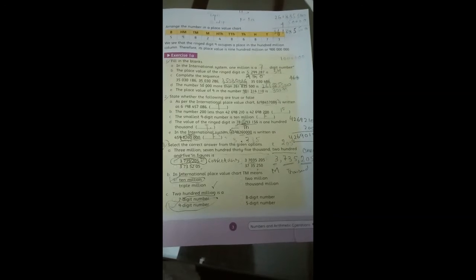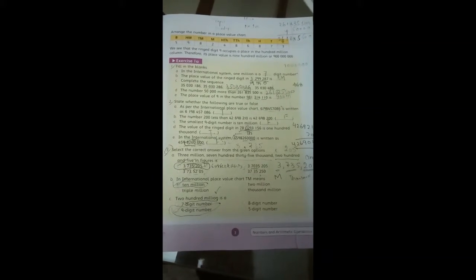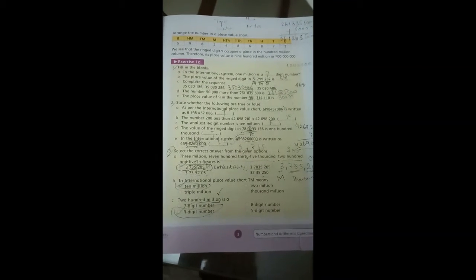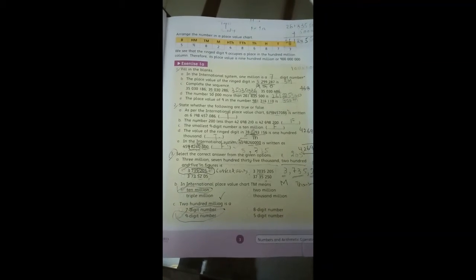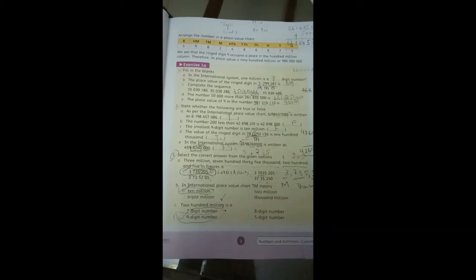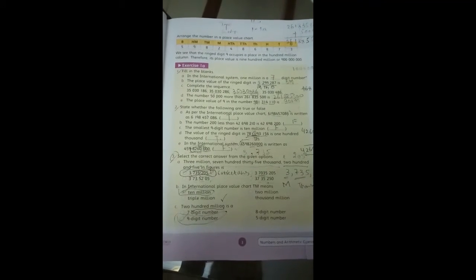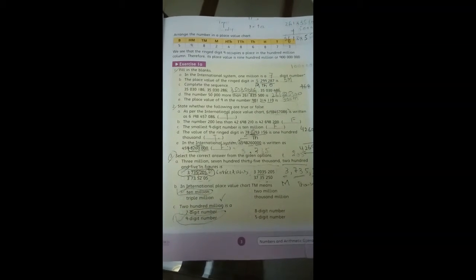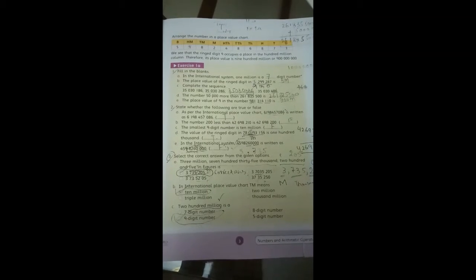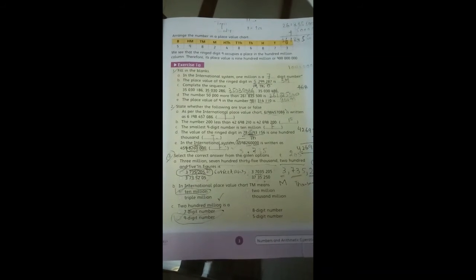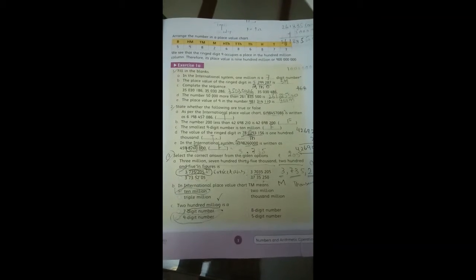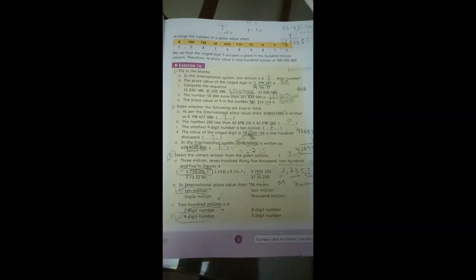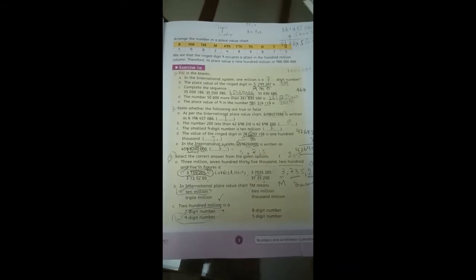Question number three of exercise 1A: select a correct answer from the given options. You have to select the correct option from the given options. In the questions you have to select 3,735,205 in figures.